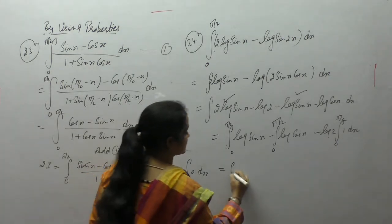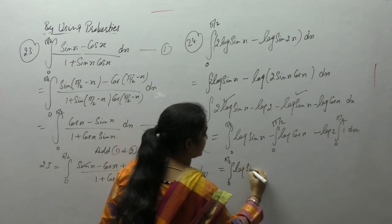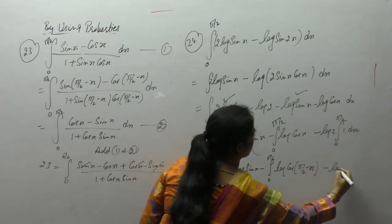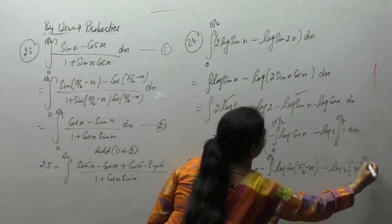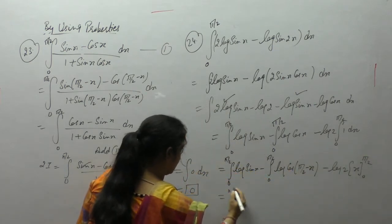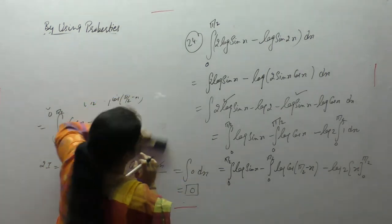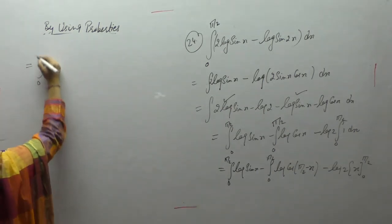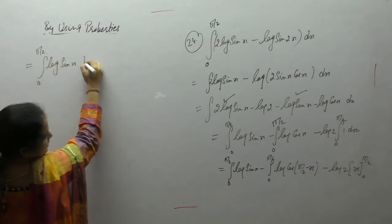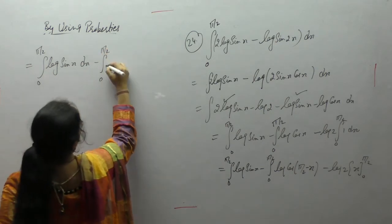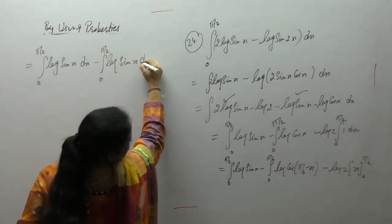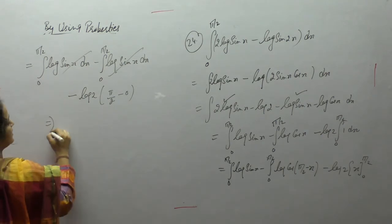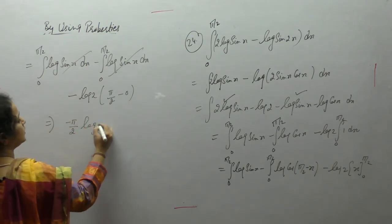Instead of cos x, we apply the property: log(cos(90° - x)) = log(sin x), since cos(90° - θ) = sin θ. So the integral from 0 to π/2 of log(sin x) minus the integral from 0 to π/2 of log(cos(90° - x)) leaves the log 2 term: result is (π/2 - 0) times (-log 2) = -π/2 · log 2.